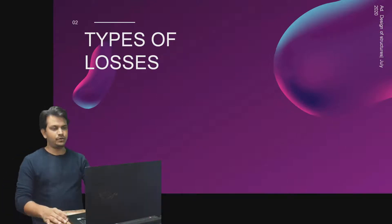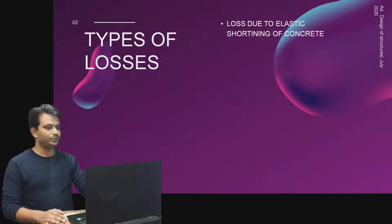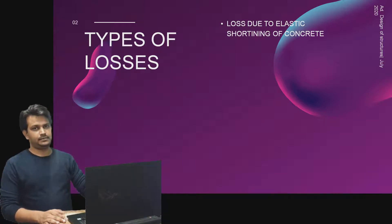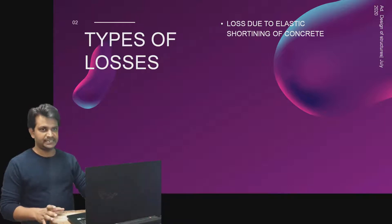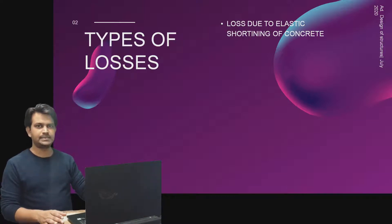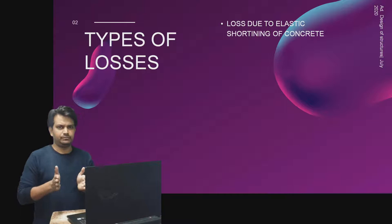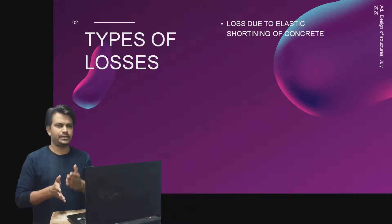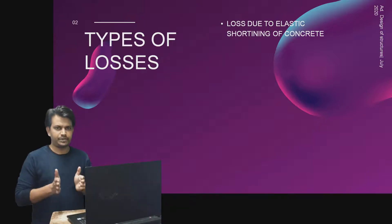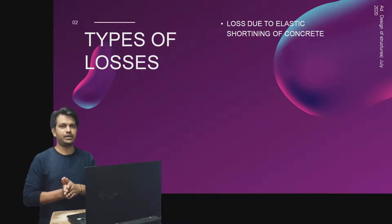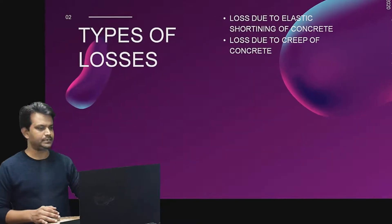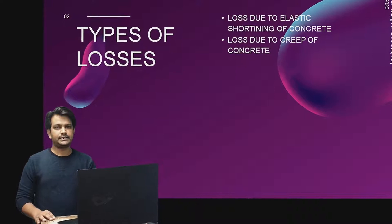First, we will list out the types of losses. The first loss is due to the elastic shortening of concrete. Elasticity is a property of every material — there is no perfectly rigid body, and by virtue of elasticity, concrete will undergo some deformation due to applied compression. This deformation leads to loss in strain of the stressed tendon. Another loss is due to the creep of concrete, which is a time-dependent process.